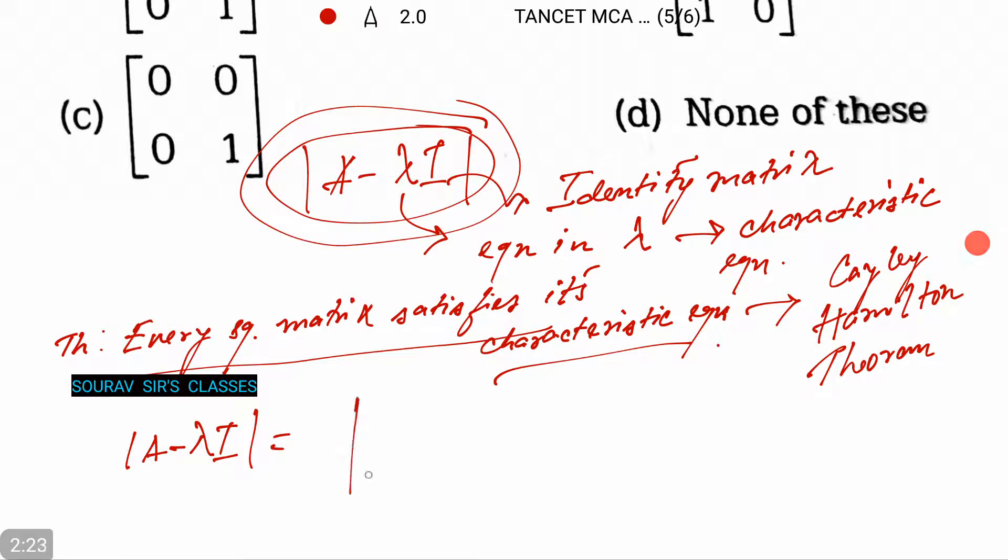Which will give us 3 minus λ. You're just multiplying λ with the identity matrix and nothing else. So if you negate properly, 3 minus λ, 1, minus 1, 2 minus λ.